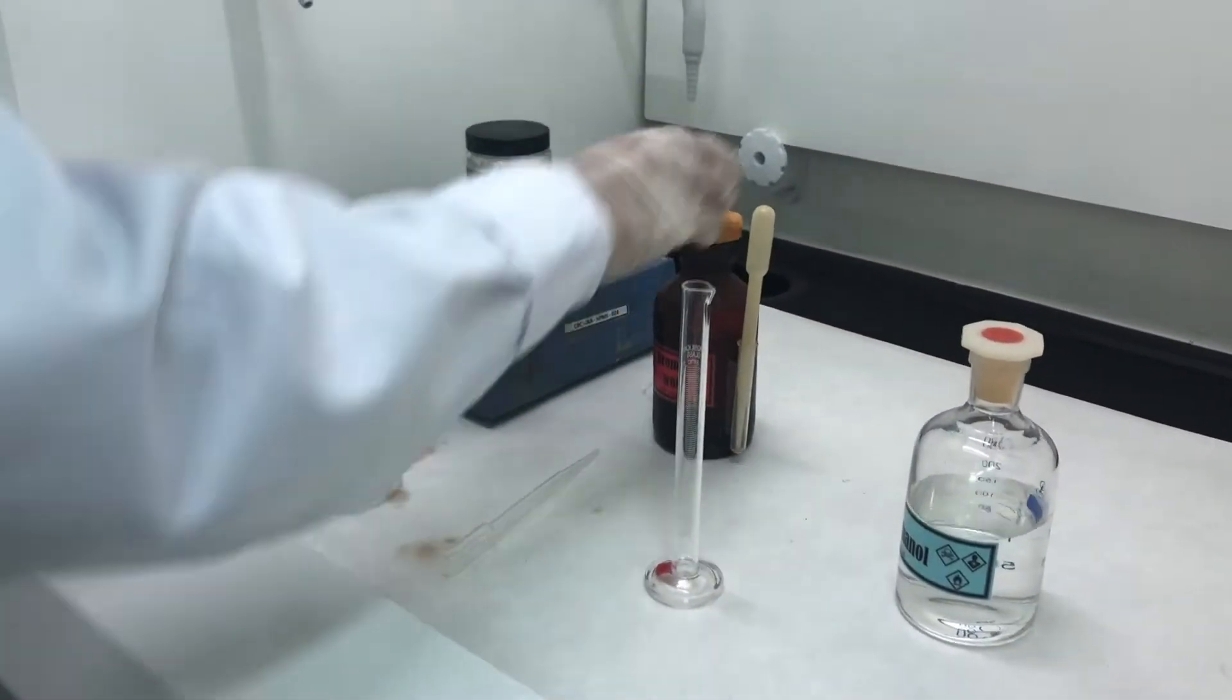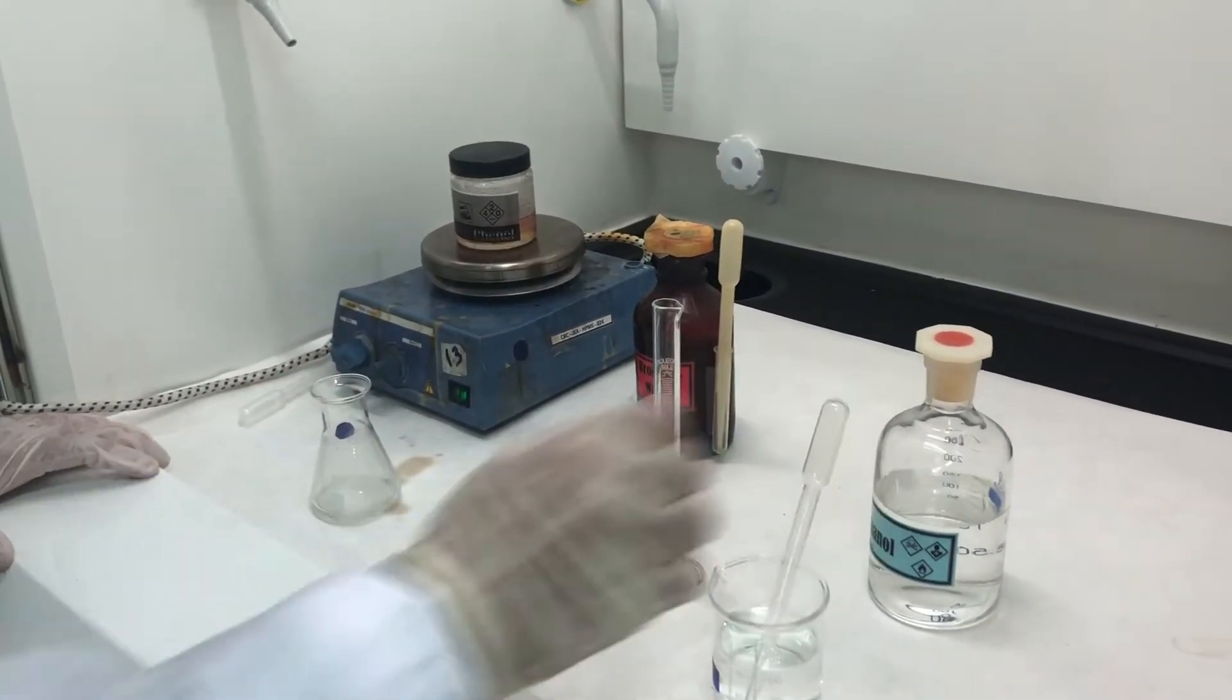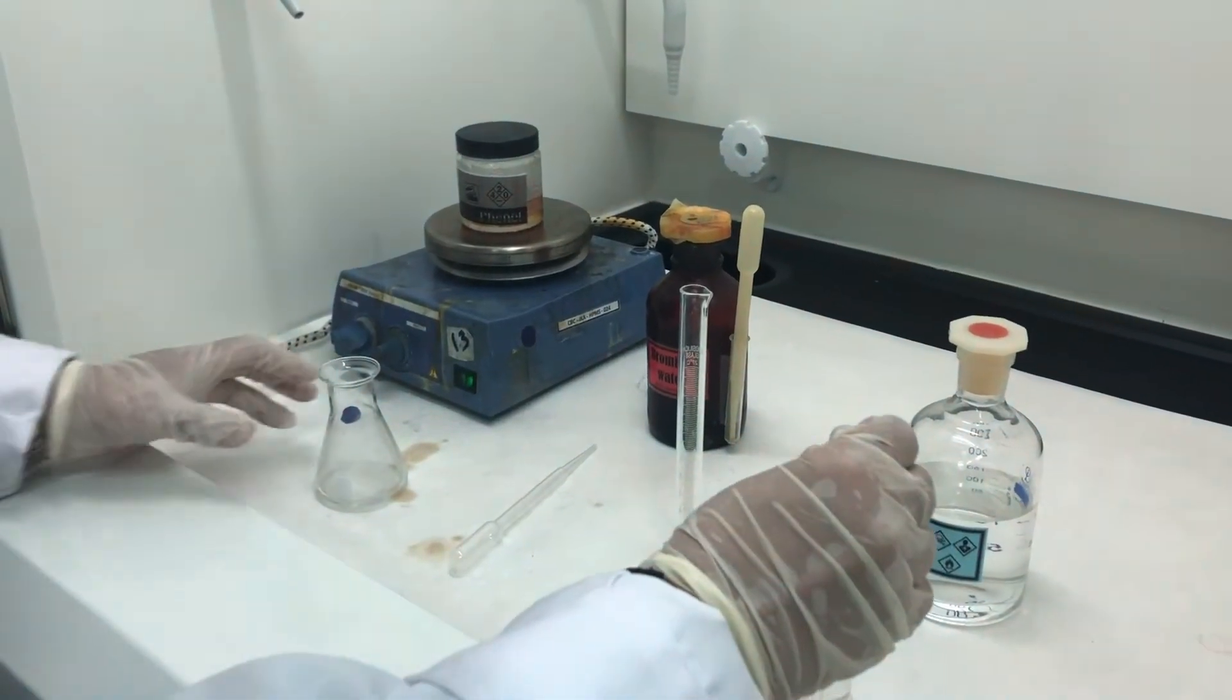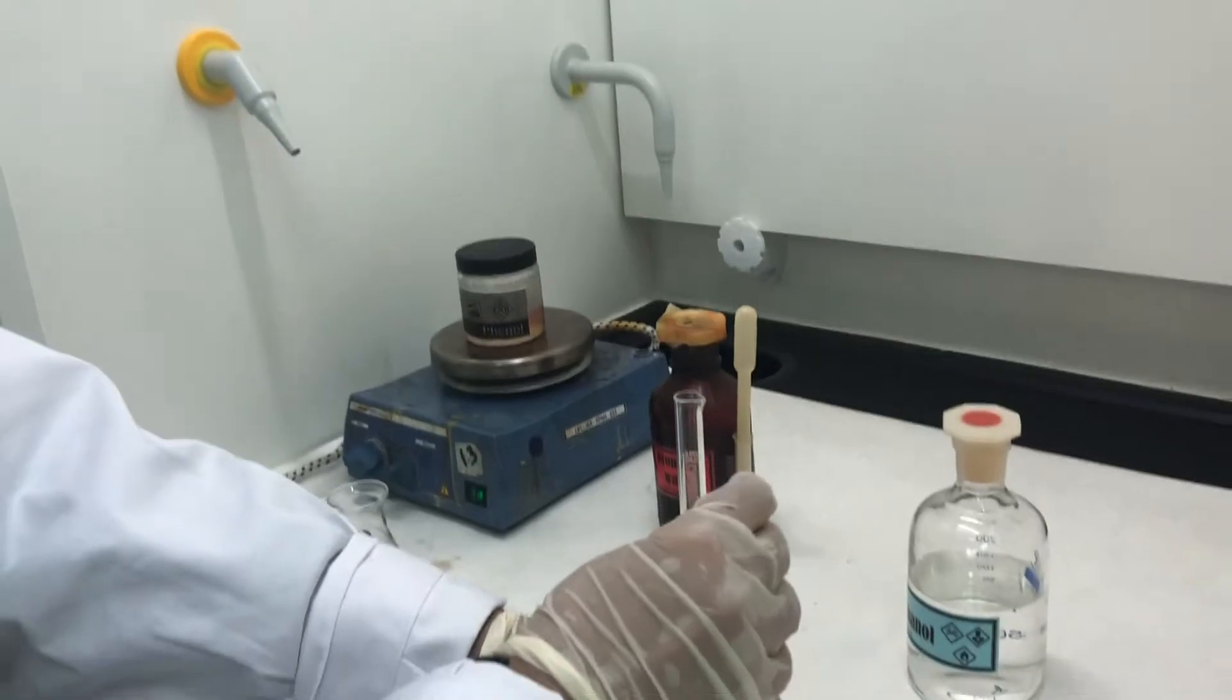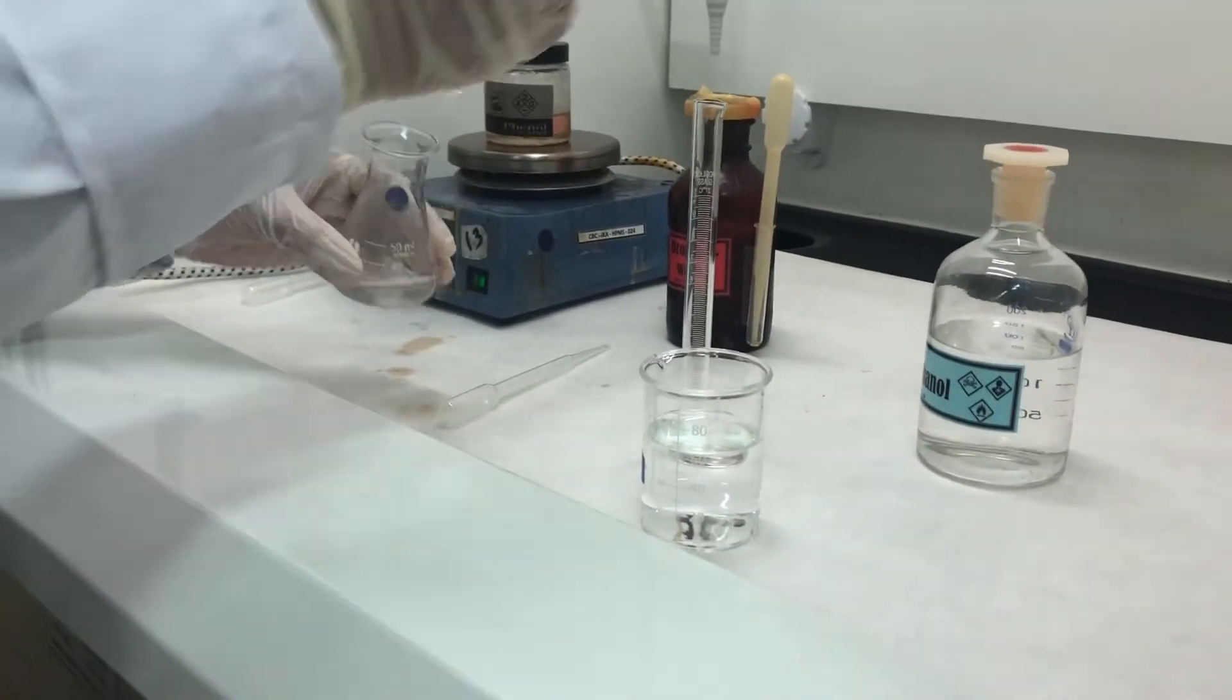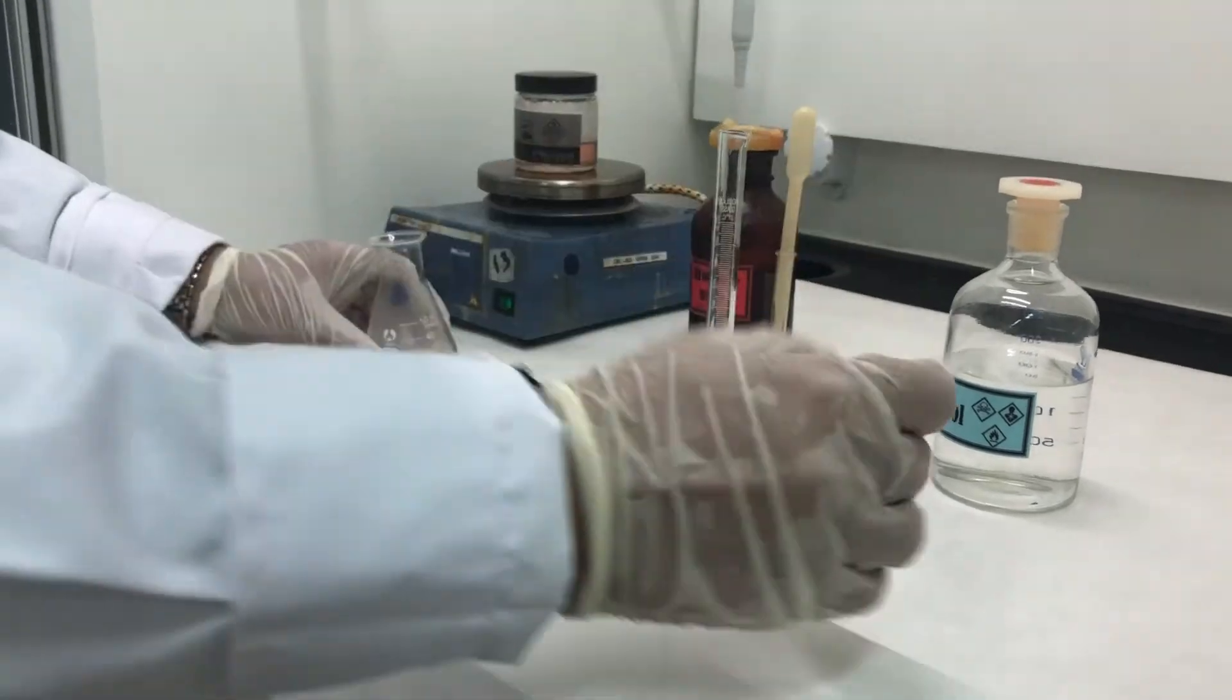Now, coming to the third step, where I am going to add the bromine water. As you know, bromine is highly corrosive. Okay, before that, I need to add around 5 ml of water to make it more diluted, since we are going to add the bromine. I have just added 2.5. I need to add another 2.5 here. So I have added water.